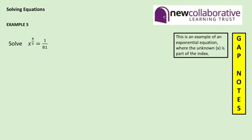So we can rearrange this equation firstly by taking the fourth root. Now the fourth root of 81 is 3, so that means that x to the power 1 third must equal positive or negative 1 third.